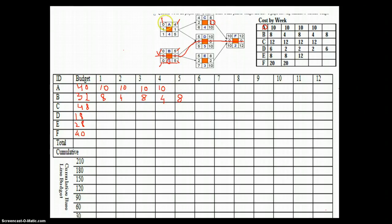And you can see that activity C depends on completion of activity A. So C could start from this point over here. And C has a budget of 12, 12, 12 for the first four weeks. This is reflected here.